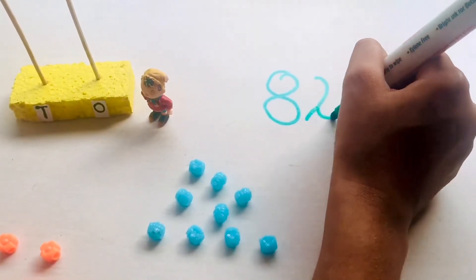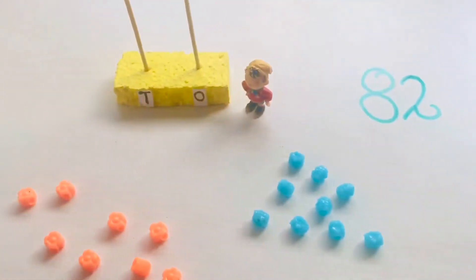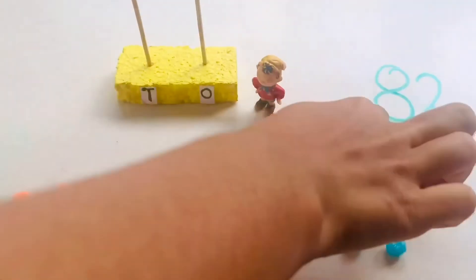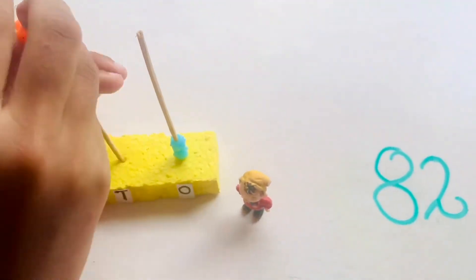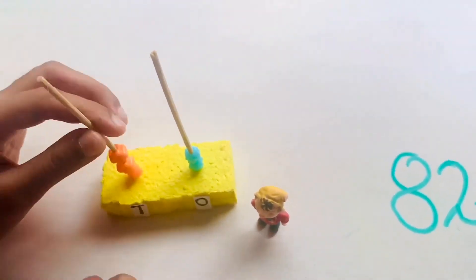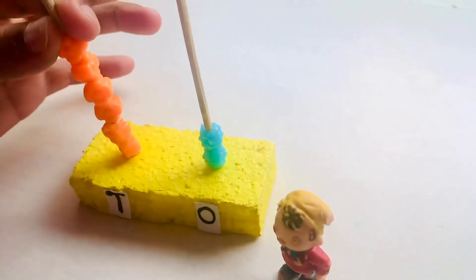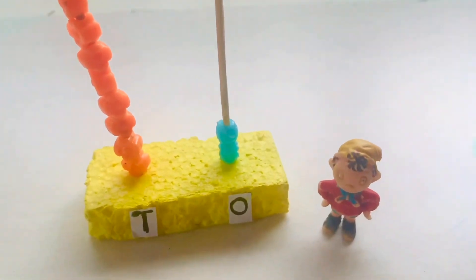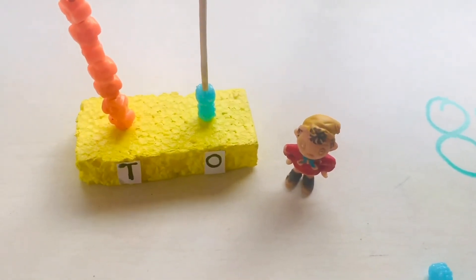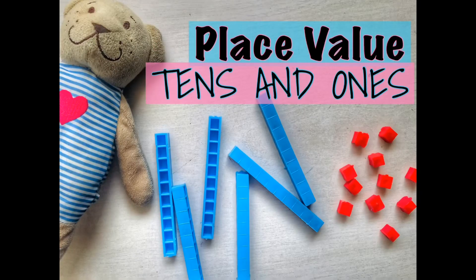The last number that we are going to make is 82. First we place the units beads, that is starting with the blue beads. 1, 2. Then we move to the orange beads, the tens beads. 1, 2, 3, 4, 5, 6, 7, 8. That is it. We have finished making.